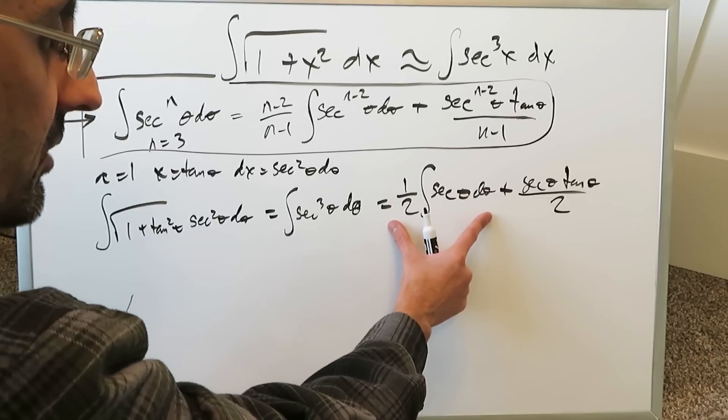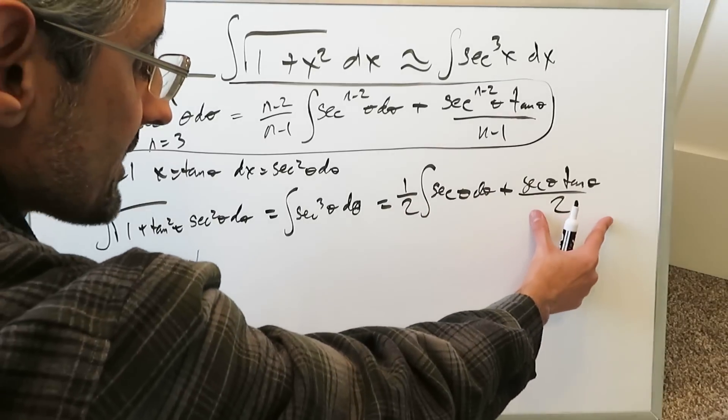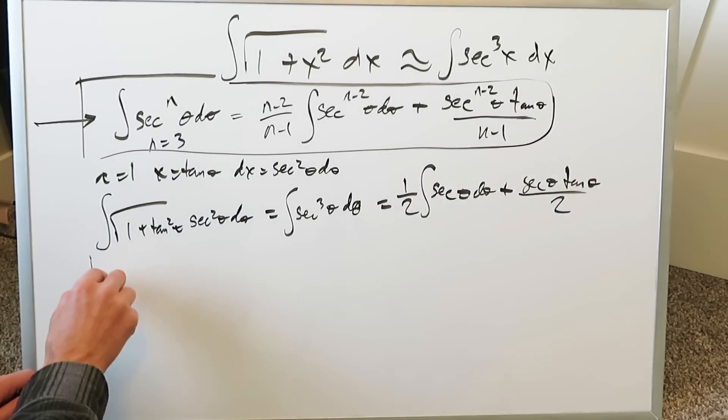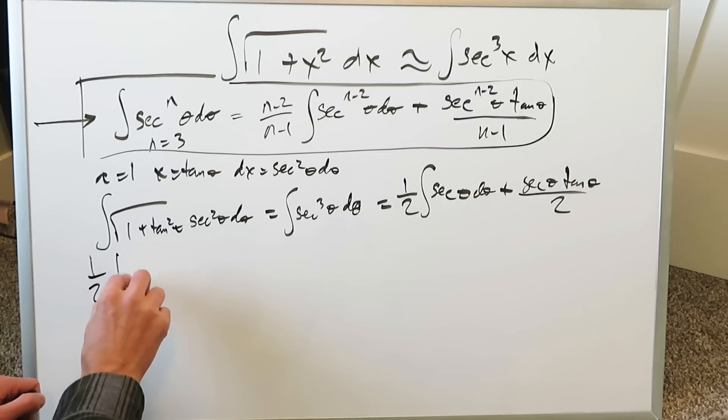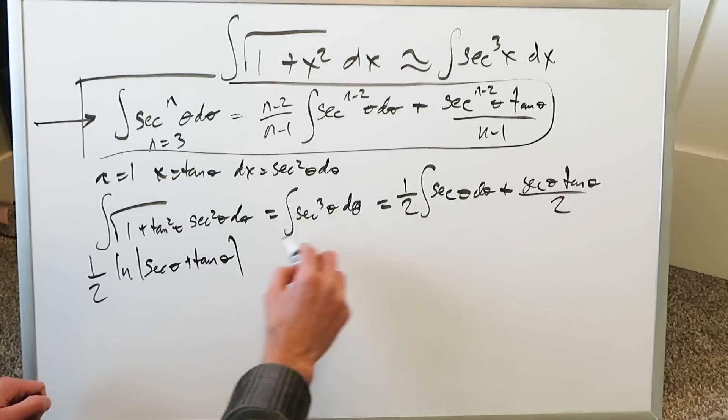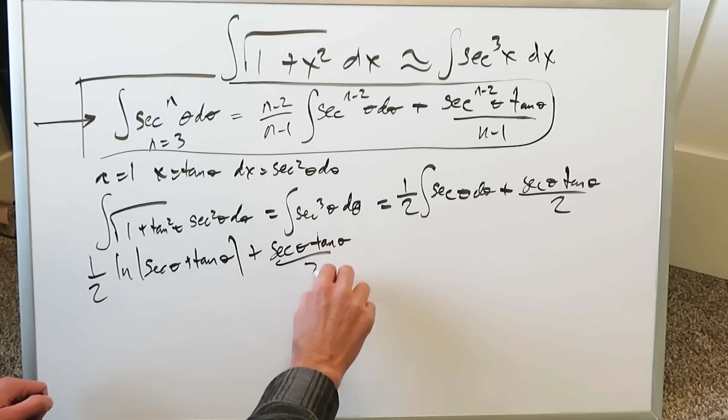Here you have secant theta tan theta over 3 minus 1 which is 2. Look, this is the only part under the integral. This is not an integral anymore, it's just a rational function. You just have to worry about this and you can easily handle it because secant theta comes out as natural log secant theta plus tan theta, and then you have all of that which is already part of your antiderivative: secant theta tan theta over 2.